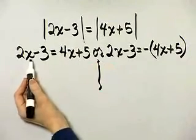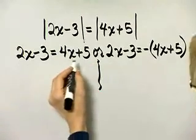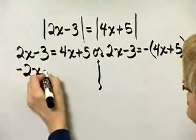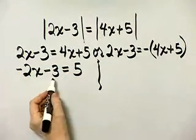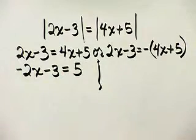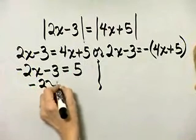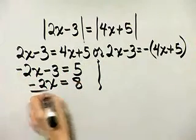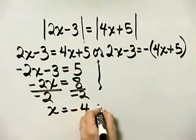Let's subtract 4x from both sides, moving variable terms to the left. If I subtract 4x from both sides, 2x minus 4x gives negative 2x minus 3 equals 5. Then I'll add 3 to both sides, giving negative 2x equals 8. Divide both sides by the coefficient of x, and I'll have x equals negative 4. That's one possible solution.